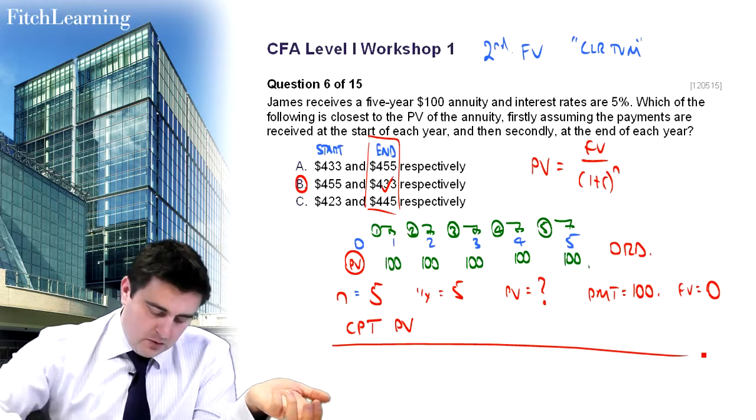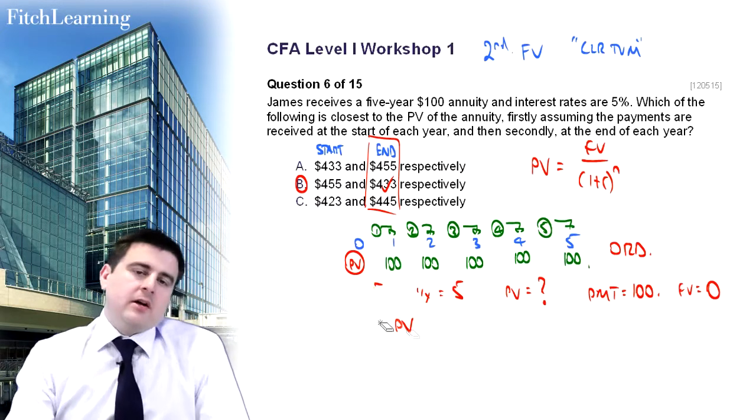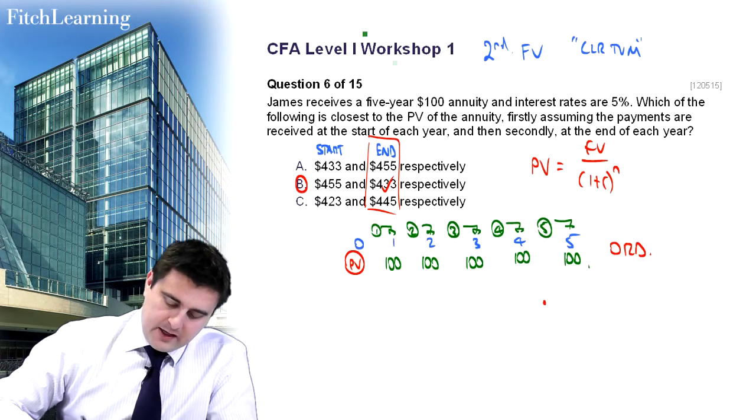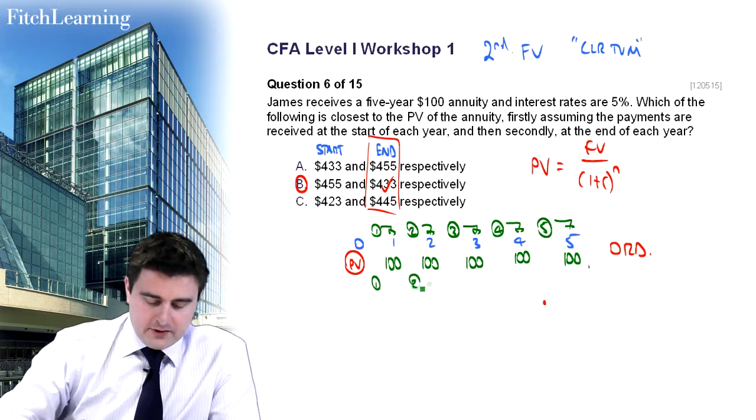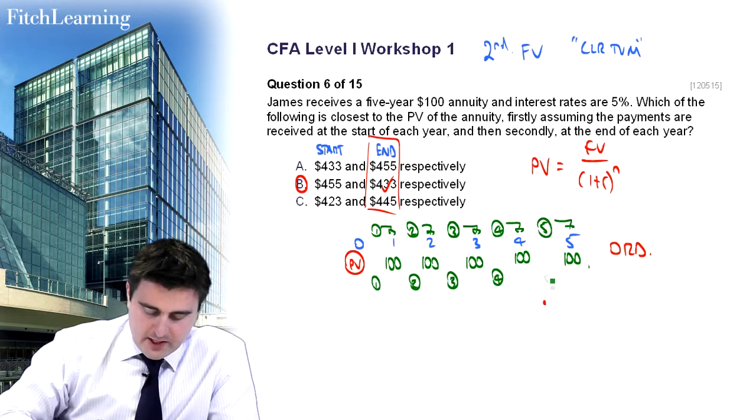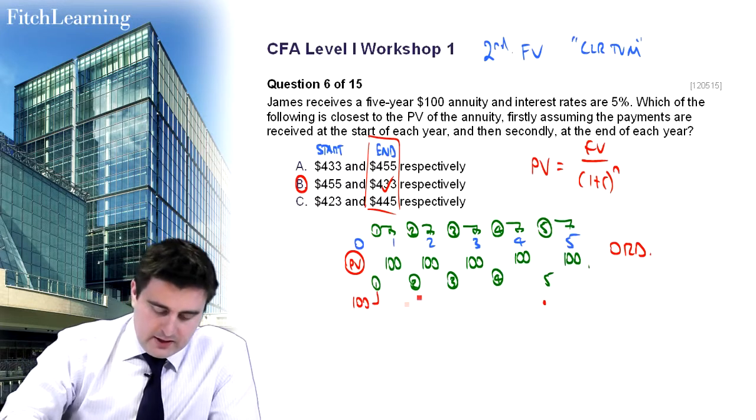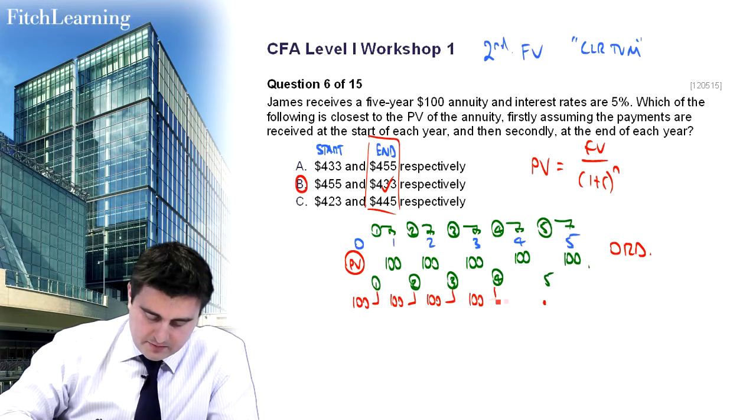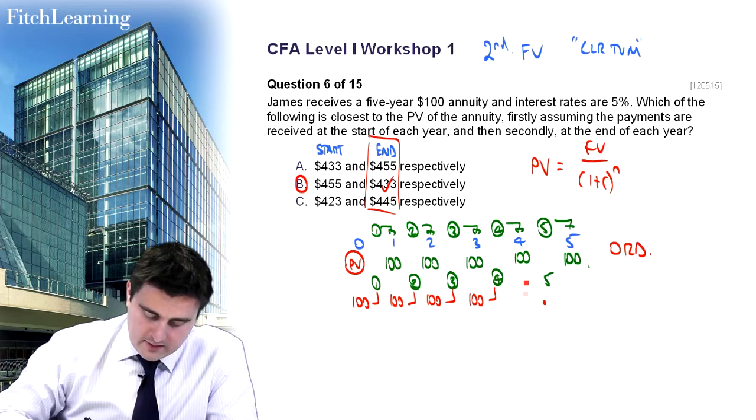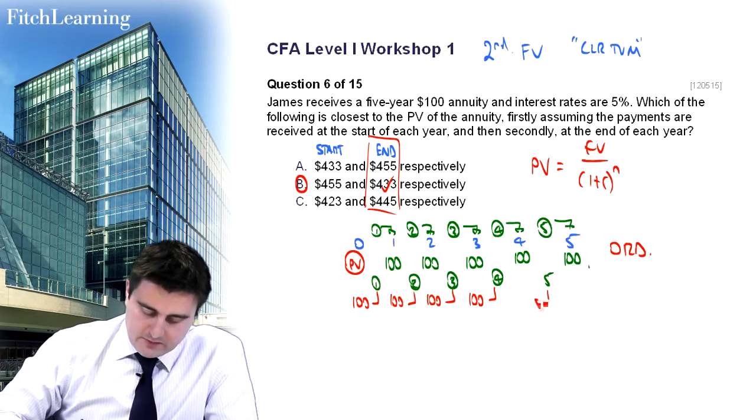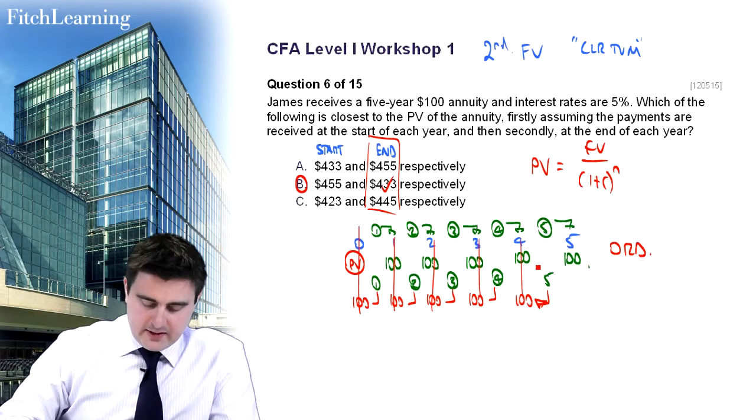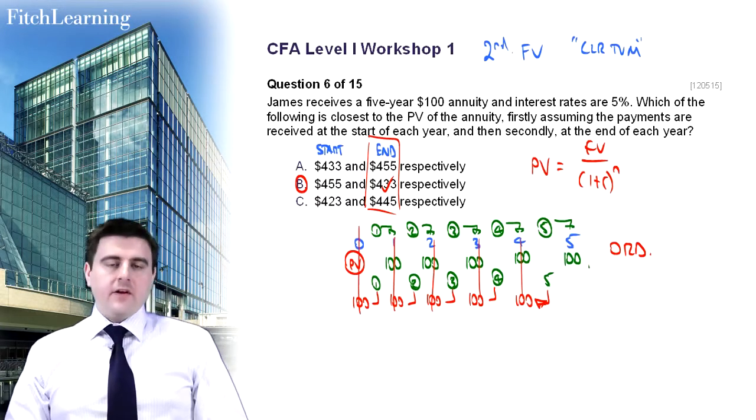But remember what we need to do is consolidate this and say, well, what if actually, these payments occurred at the start of the period? So, just looking at my timeline here, this would still be a five year annuity. But the difference is now, is that when we have each year, this is a five year time period, the cash flow of 100 occurs at the start of the period rather than at the end of the period. So in this case, we've got our five cash flows. But the difference is now, is that those cash flows occur at the start of each period. So we can see here the cash flows over a five year time period.